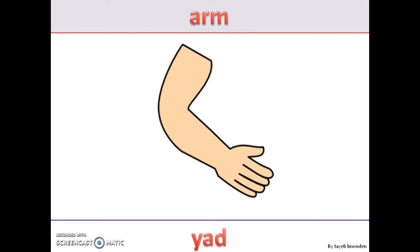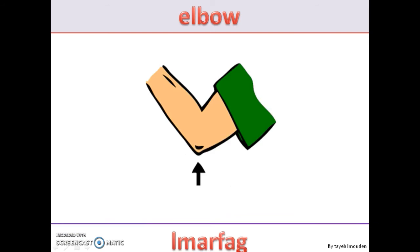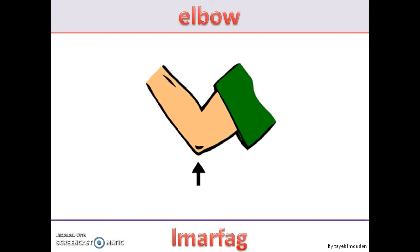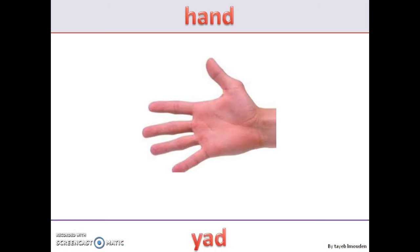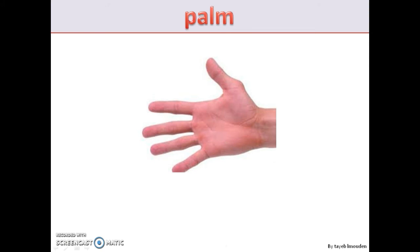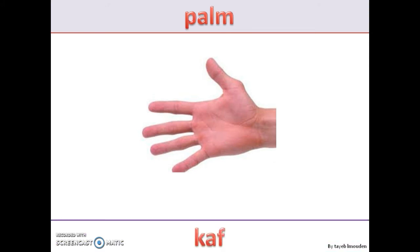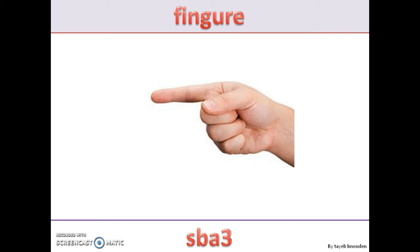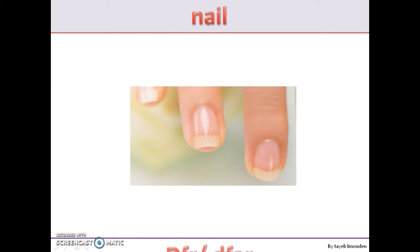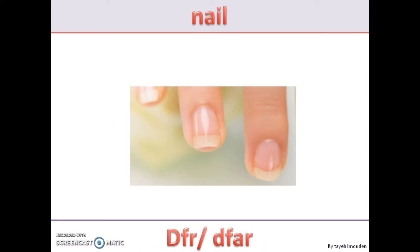يد — arm/hand. المرفق — elbow. يد — we won't say كف (palm). سبع — nails. دفار — nails (plural).